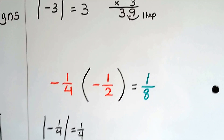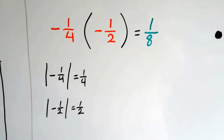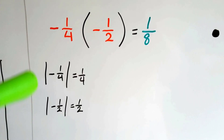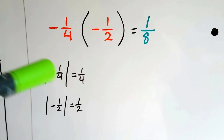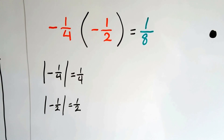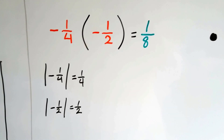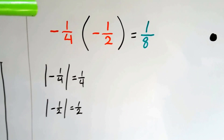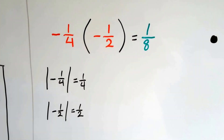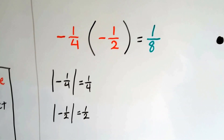Let's try another one with fractions. We've got negative 4 over something times negative one-half. The absolute value of negative one-fourth is one-fourth, and the absolute value of negative one-half is one-half. We multiply straight across: 1 times 1 is 1, 4 times 2 is 8. We get a positive one-eighth.